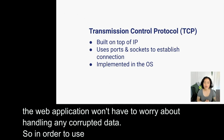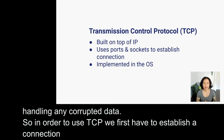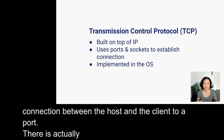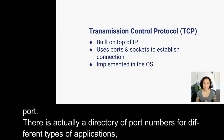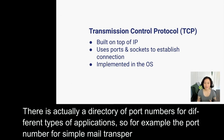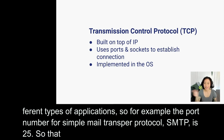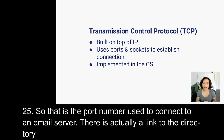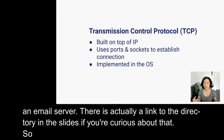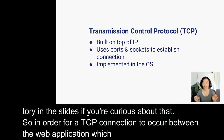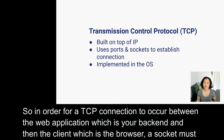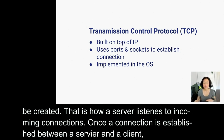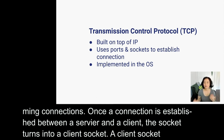In order to use TCP, we have to first establish a connection between the host and the client through a port. There's actually a directory of port numbers for different types of applications. For example, the port number for Simple Mail Transfer Protocol, SMTP, is 25 — that's the port number used to connect to an email server. In order for a TCP connection to occur between the web application, which is your backend, and the client, which is the browser, a socket must be created. That's how a server listens for incoming connections. Once a connection is established between the server and client, the socket turns into a client socket, which is how the server can share information with the client and vice versa.